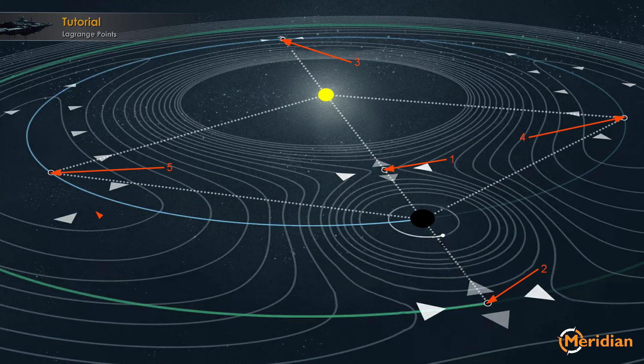And Lagrange 5 is located behind. So in this case, the planet rotates to the right from our view.